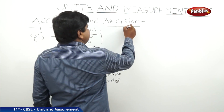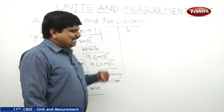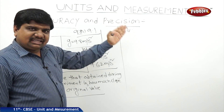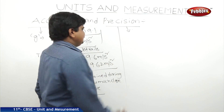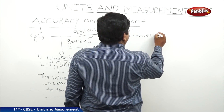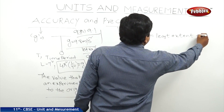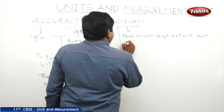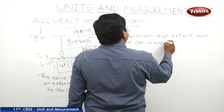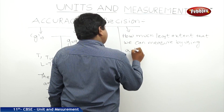The next concept is precision. Precision is dependent on the physical device. How much — or what is the least value — that we can measure using a physical device is called the precision of the instrument.